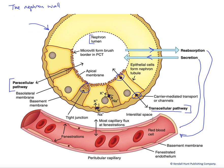But they could also be channels. And so we've got these pathways across the apical and the basolateral membrane for items being reabsorbed or secreted.